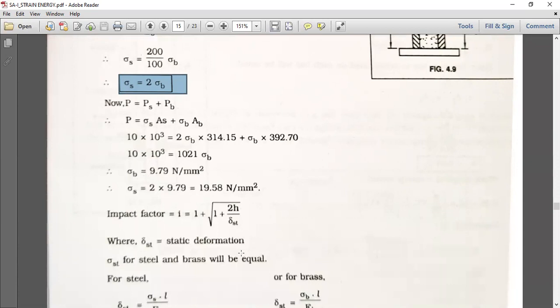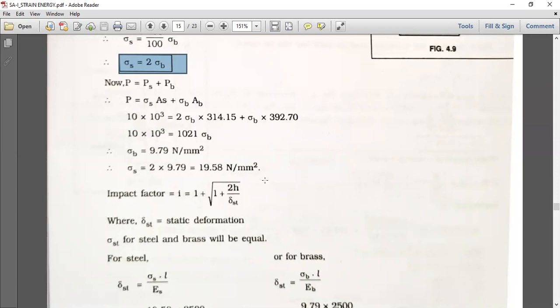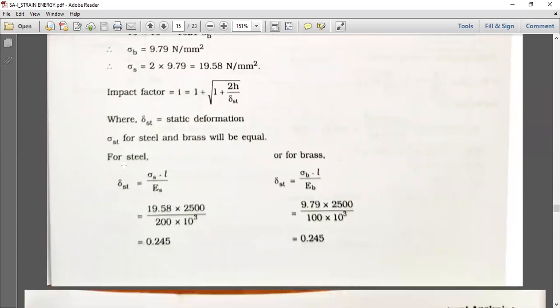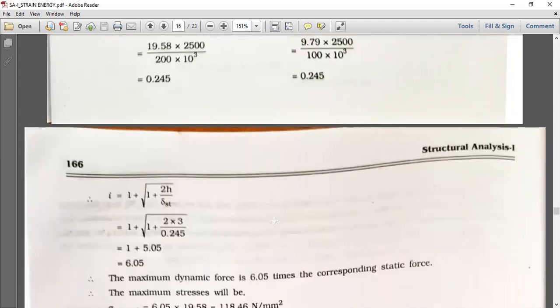Now the impact factor: I equals 1 plus square root of (1 plus 2 times height divided by delta ST), where delta ST is the static deformation, which for steel and brass have the same value. For steel, delta ST equals sigma S times L upon Es. Using the values of sigma S, L, and Es, we can find delta ST equals 0.245. Similarly, for the brass section, delta ST equals 0.245.